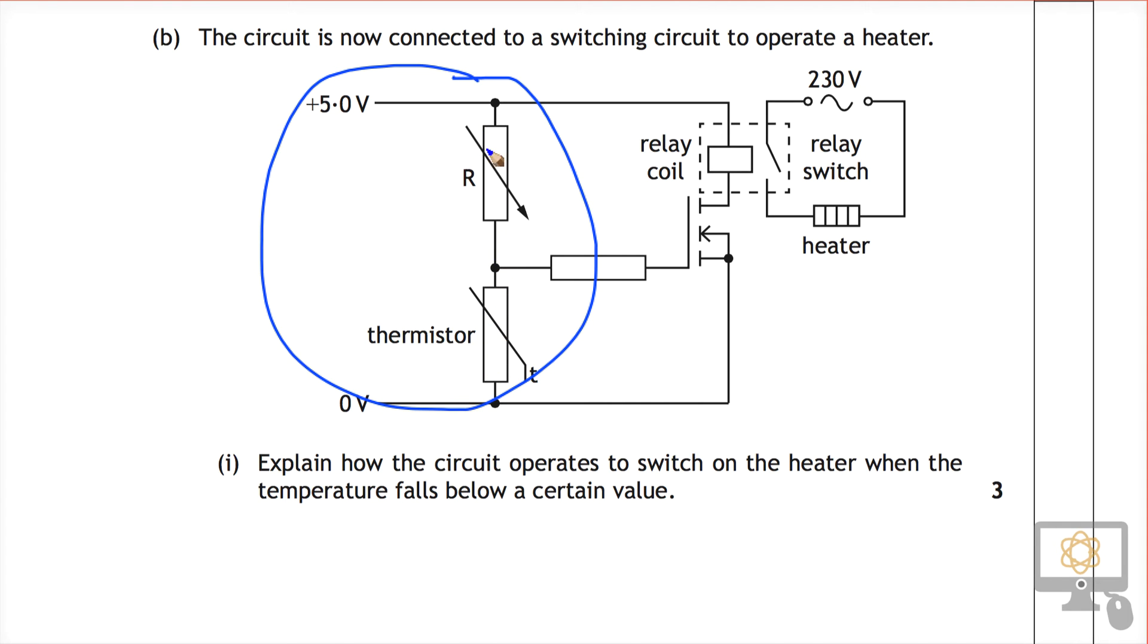And so it says that potential divider circuit is connected to a switching circuit. So the switching circuit is effectively, the key part is this part here, which is not so familiar. This is the circuit symbol for a MOSFET. And a MOSFET, remember, is just a transistor which has a different switching on voltage to a standard NPN transistor, the more common one that we use in National 5.